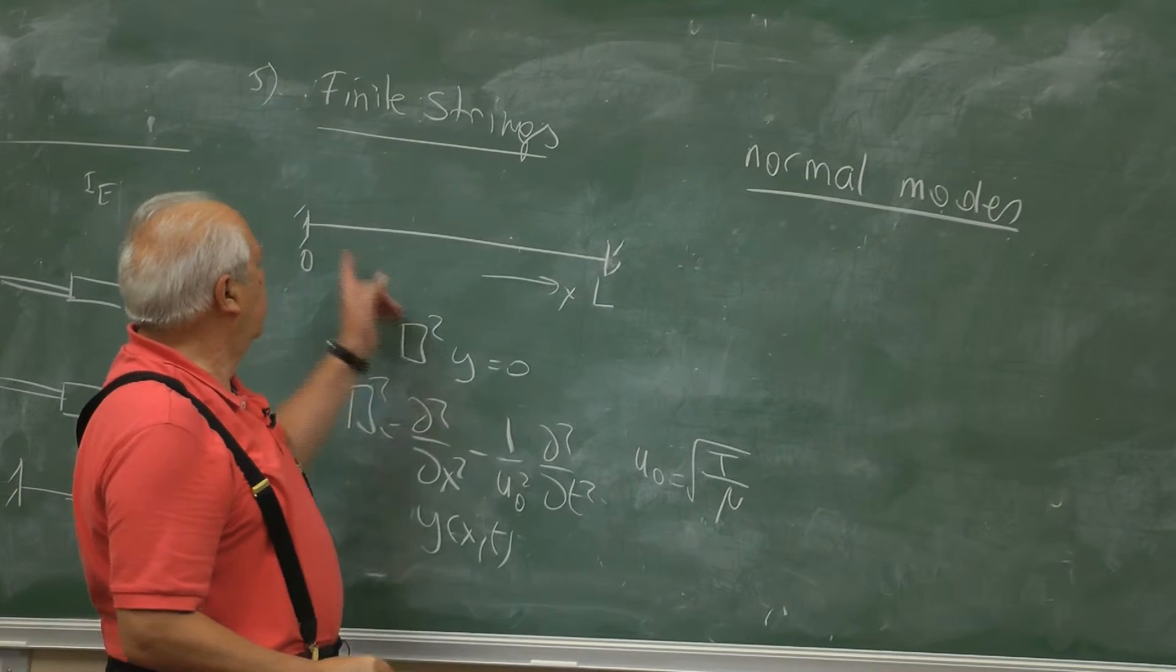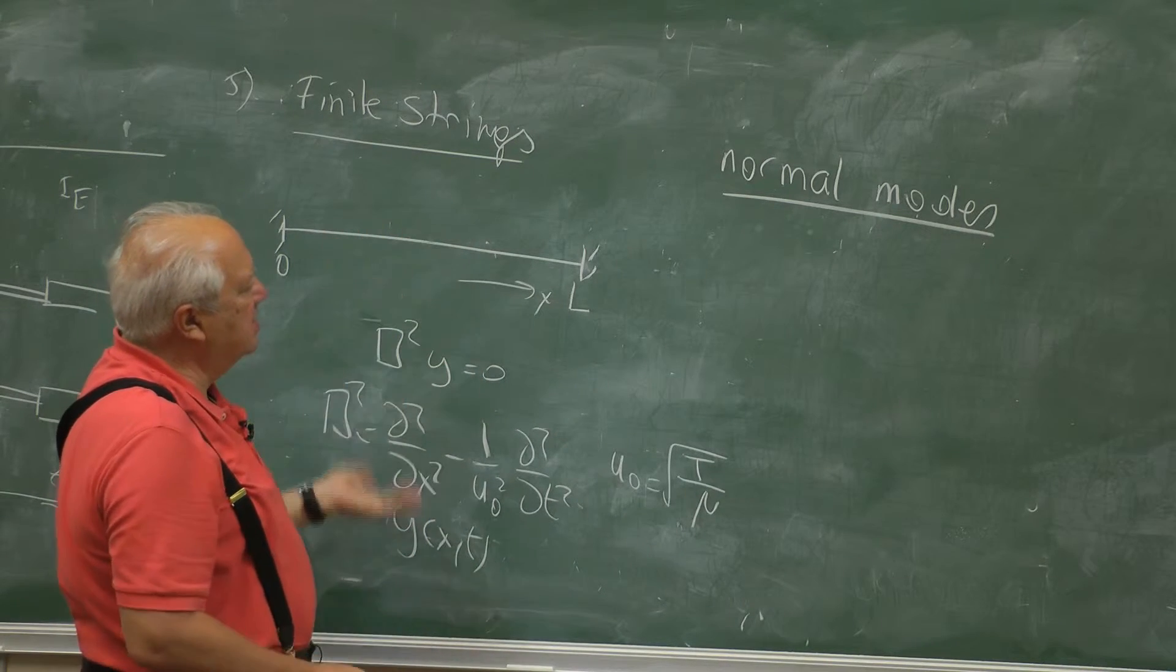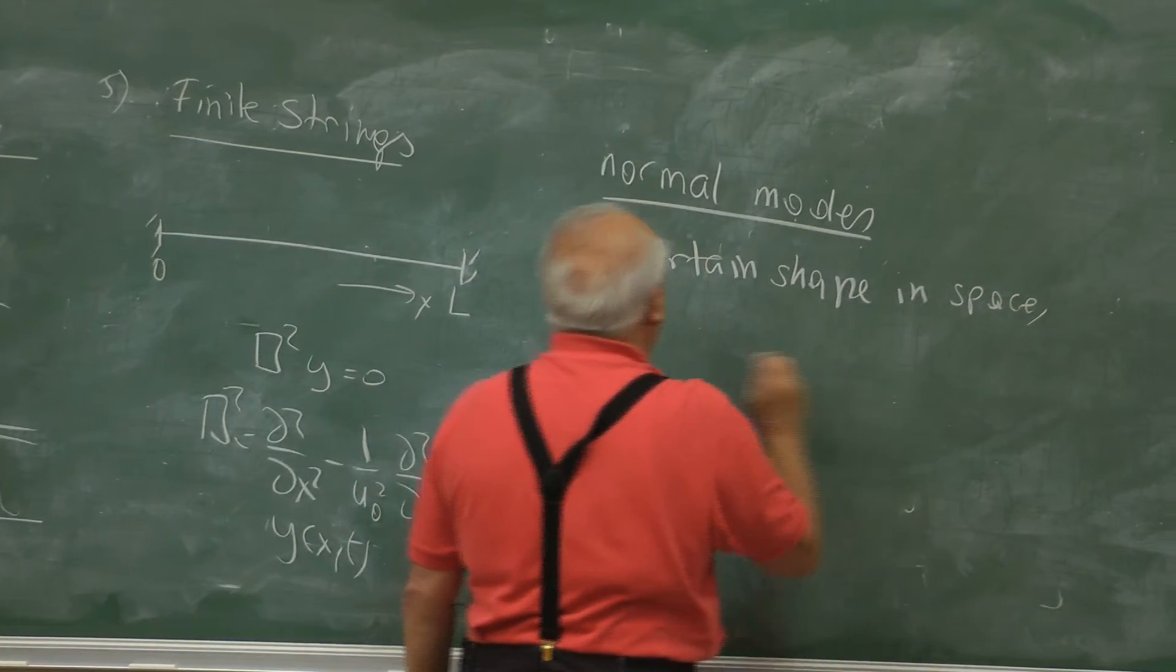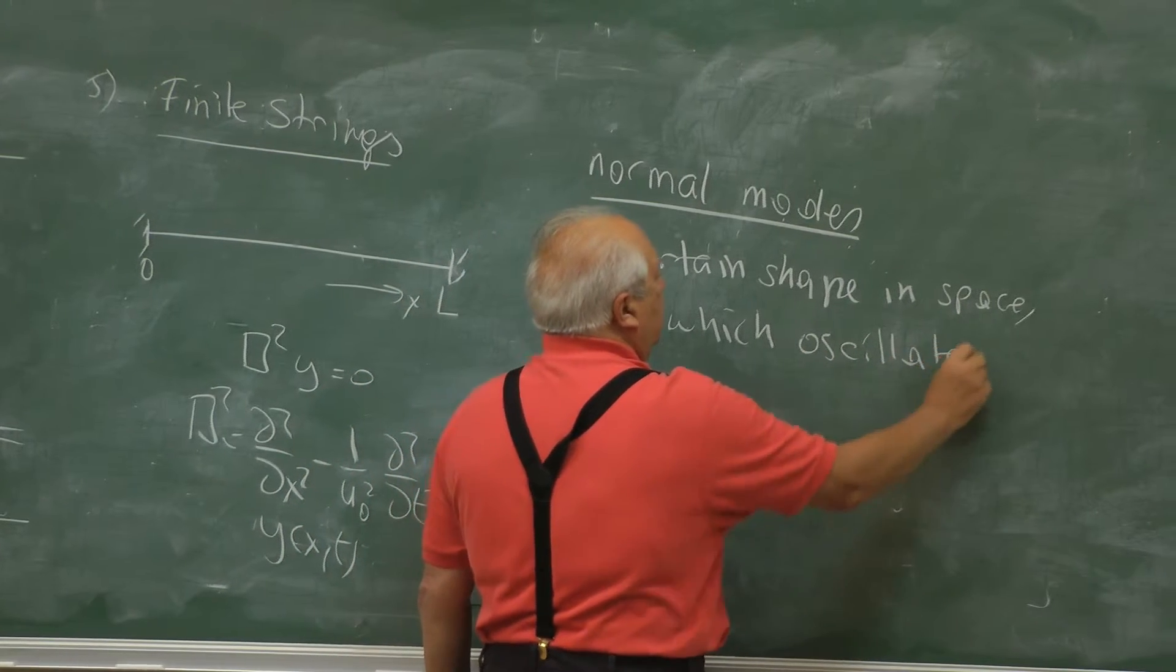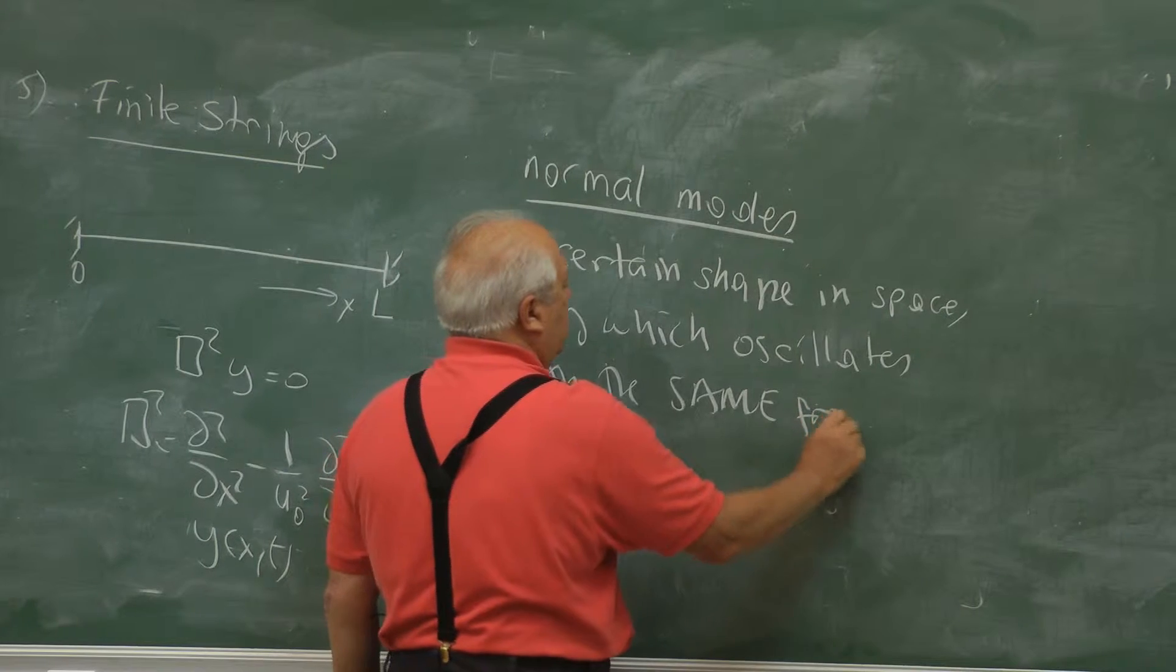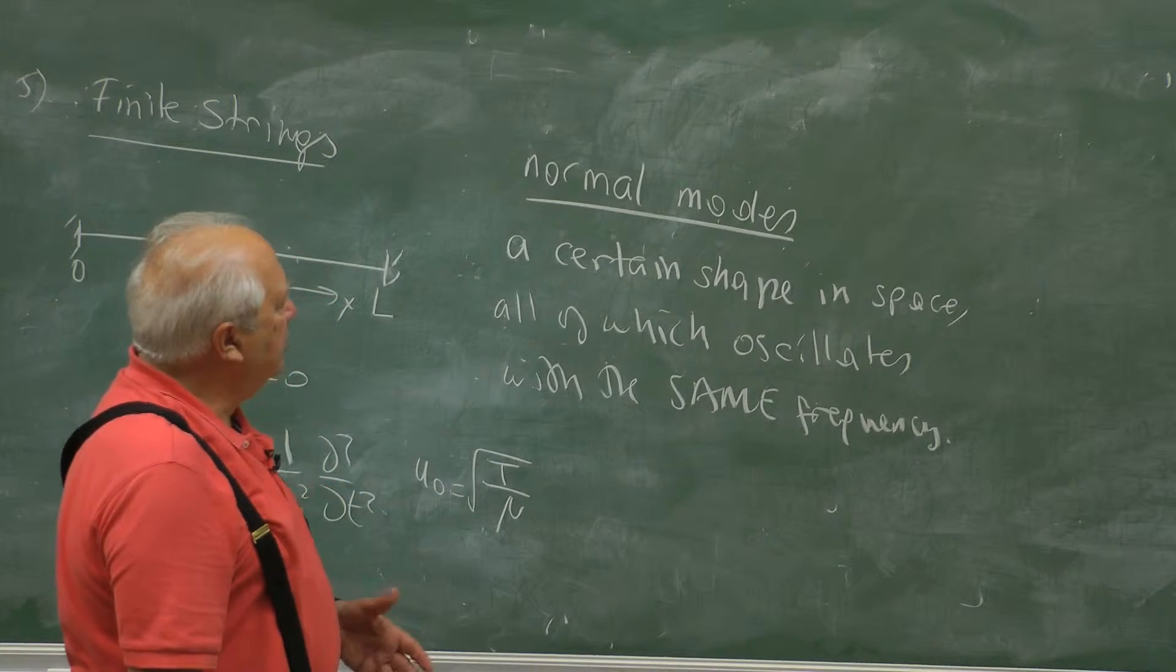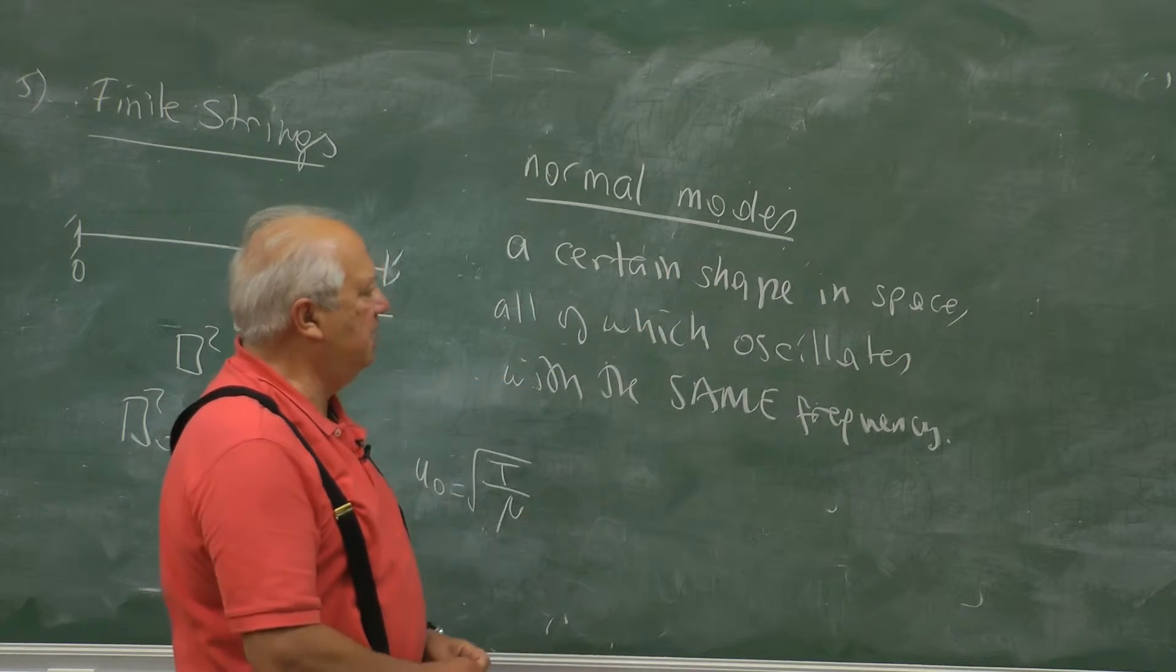It is a certain shape in space. Since our object is this finite string, it is a certain shape of this string. Let me write it down because it's a very important concept. We have a certain shape in space, all of which oscillates with the same frequency. Namely, no matter how complicated the shape is in space, all of it oscillates with the same frequency. So the normal mode problem consists of finding this shape and the frequency associated with this shape.